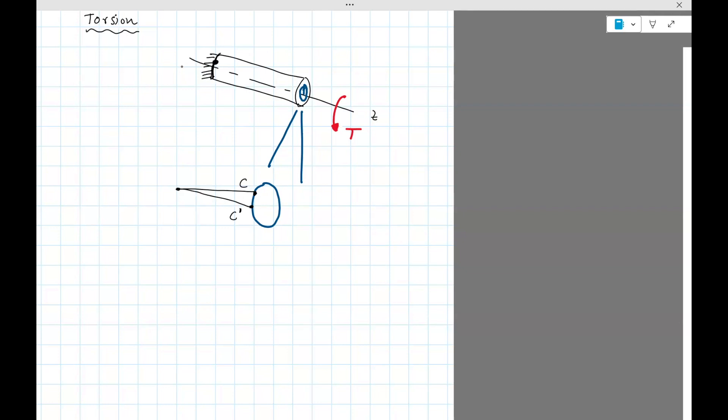So this point clearly is fixed, it's not going to move because it's fixed to the wall, right? And so this point C and C prime is going to show that there will still be an arc and that arc, let's say that the angle, the arc angle is gamma, which is this angle.